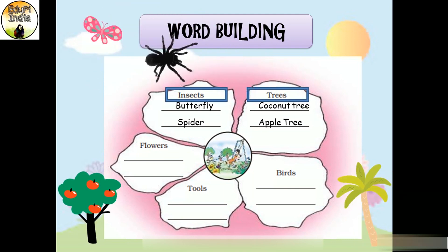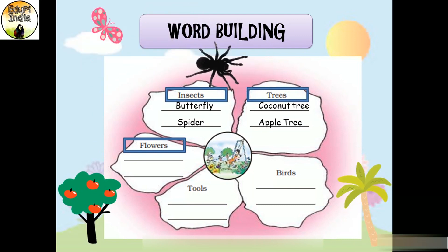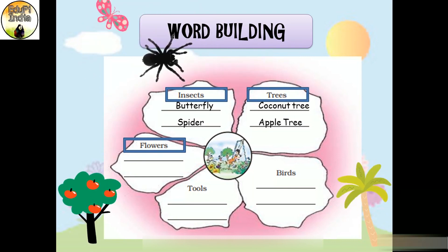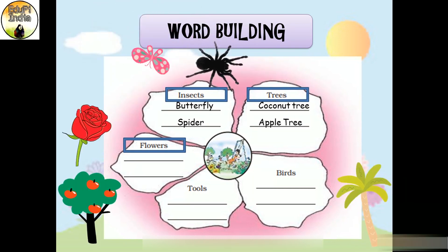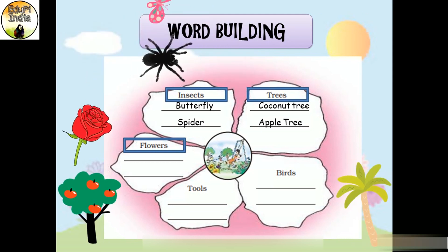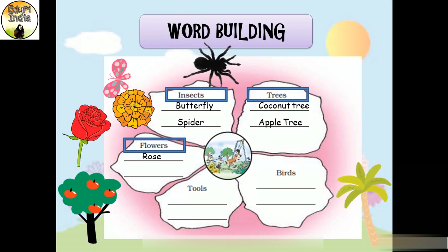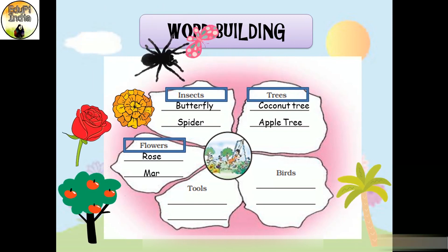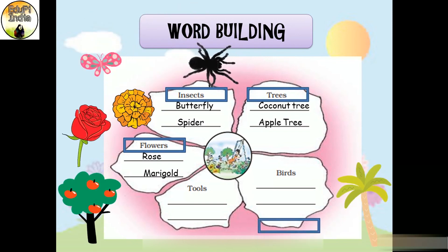Now let's discuss flowers. You have already learned about five flowers in this chapter: sunflowers, marigolds, rose, poppies and pansies. Here is a rose — R-O-S-E, rose. And here is a marigold — M-A-R-I-G-O-L-D, marigold.